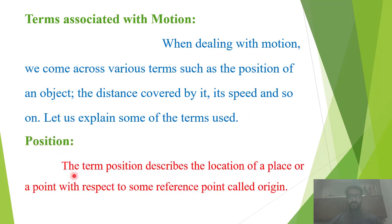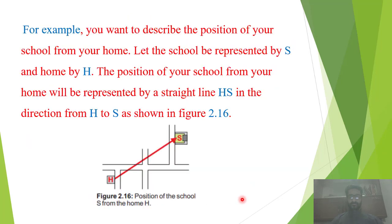Position: The term position describes the location of a place or a point with respect to some reference point called origin. For example, you want to describe the position of your school from your home. Let the school be represented by S and home by H. The position of your school from your home will be represented by a straight line HS in the direction from H to S, as shown in figure 2.16.